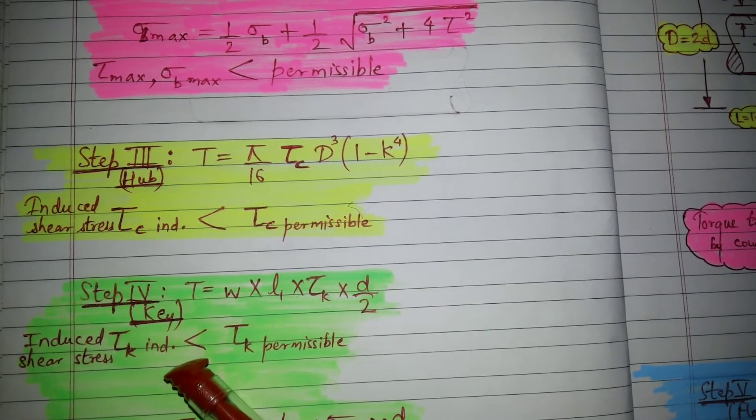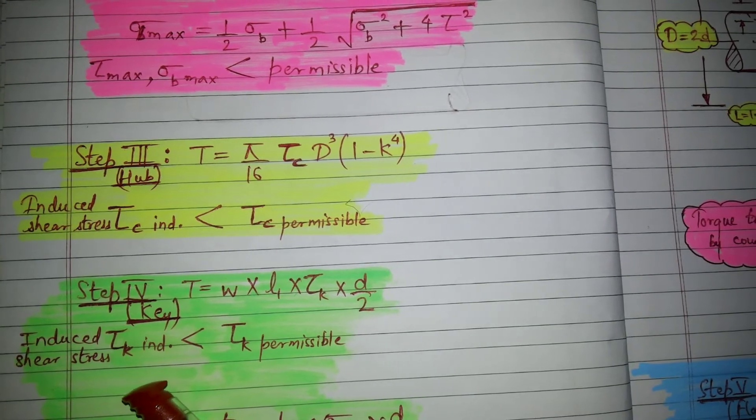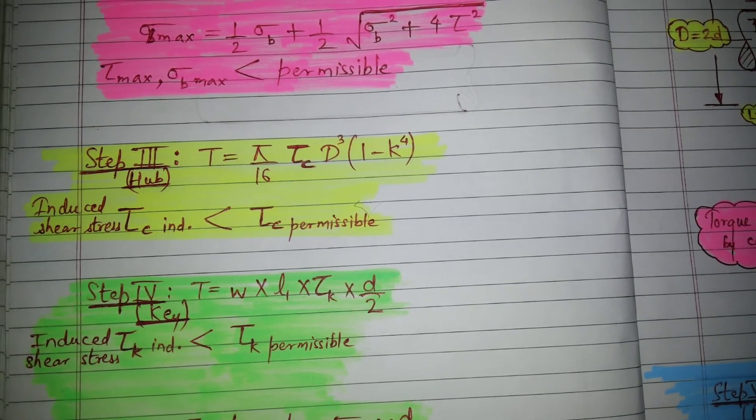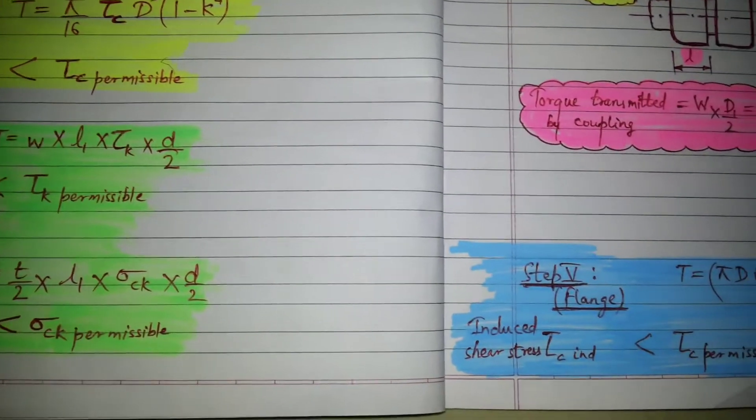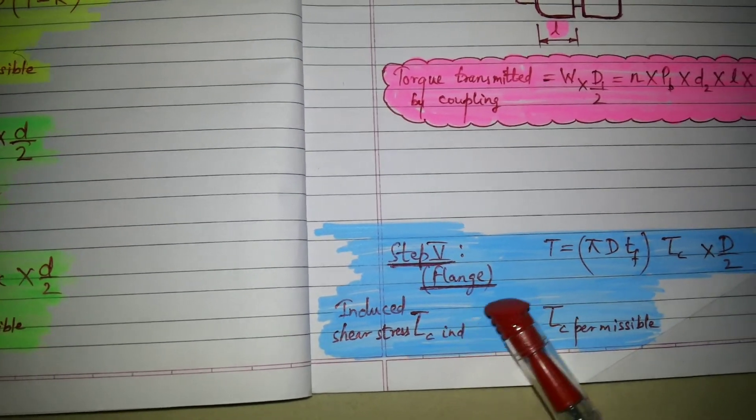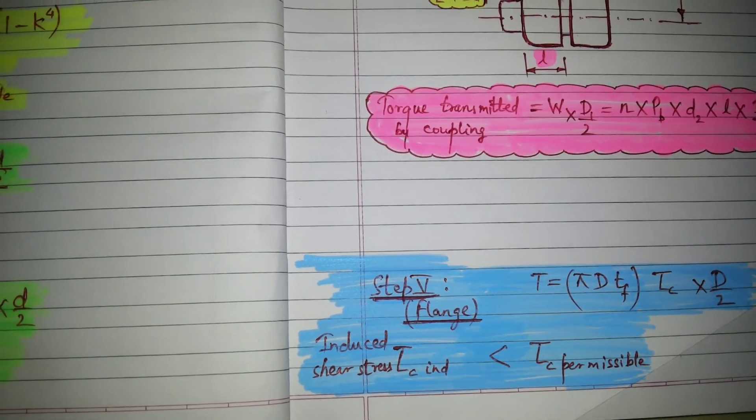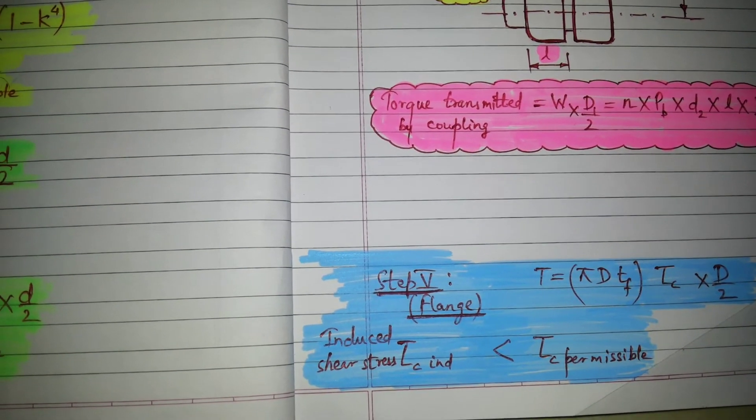Step number four we need to check what is the induced shear stress and it should be less than the permissible. And in step number five we need to check what is the induced shear stress related to flange and it should be less than the permissible.